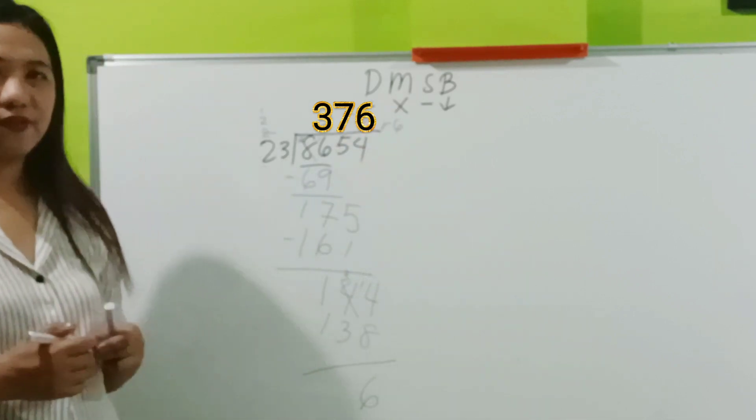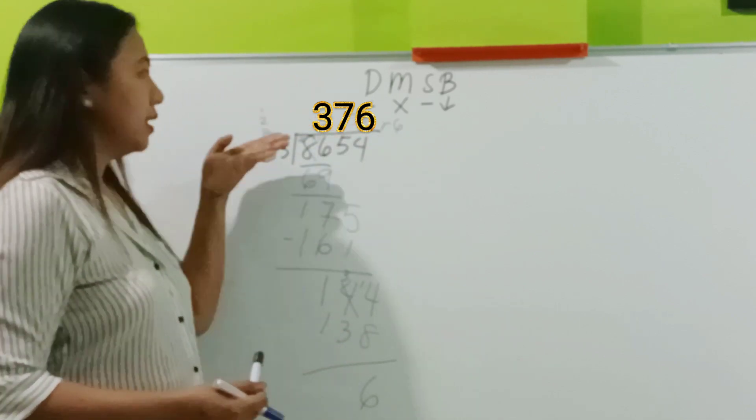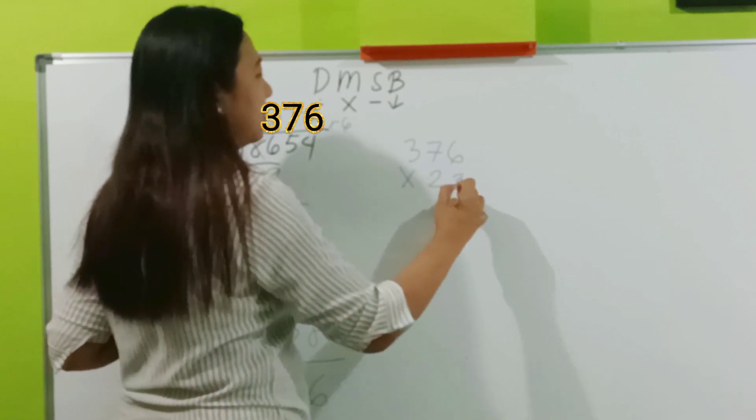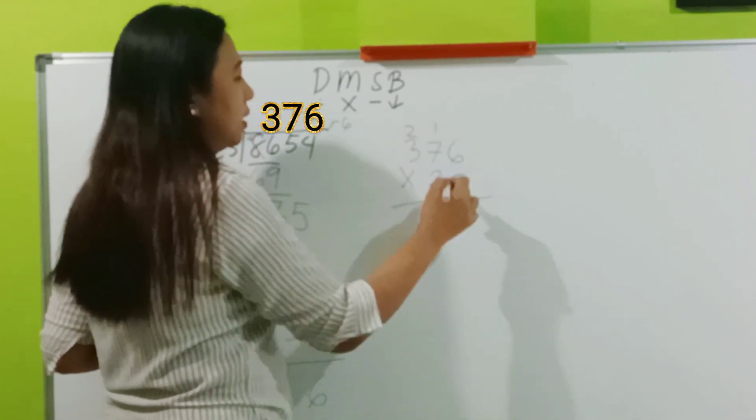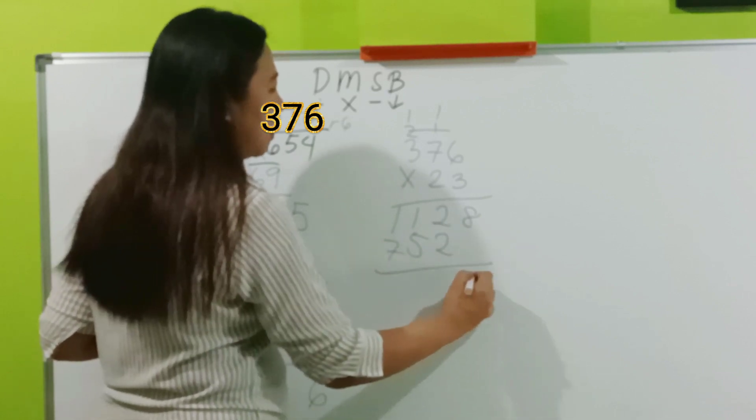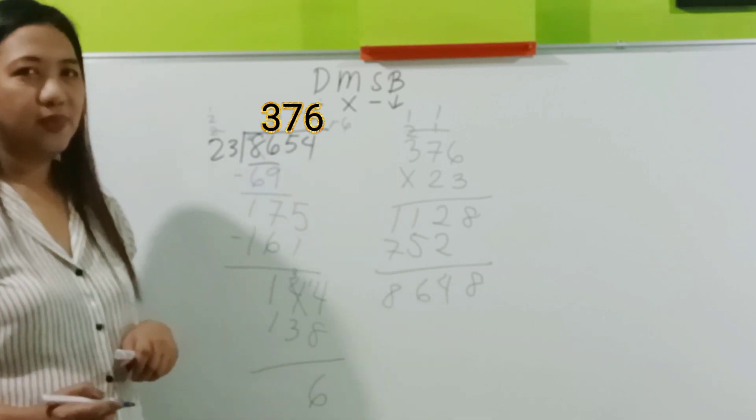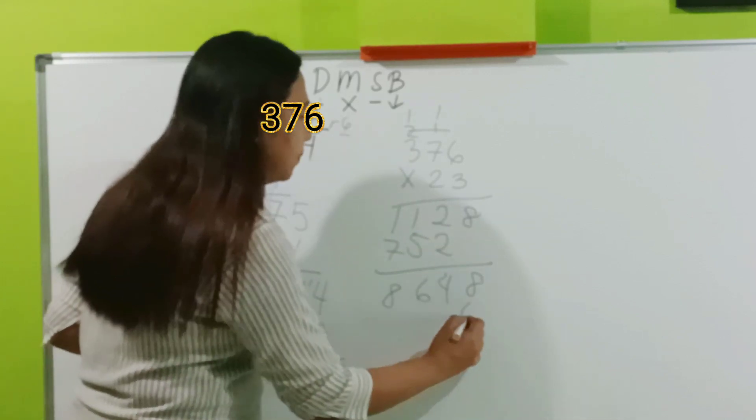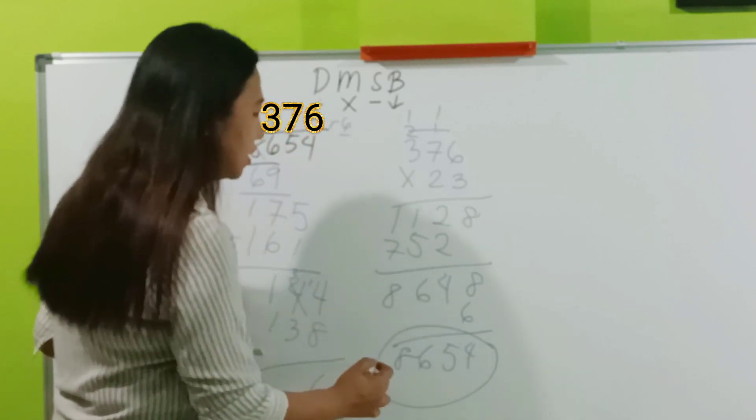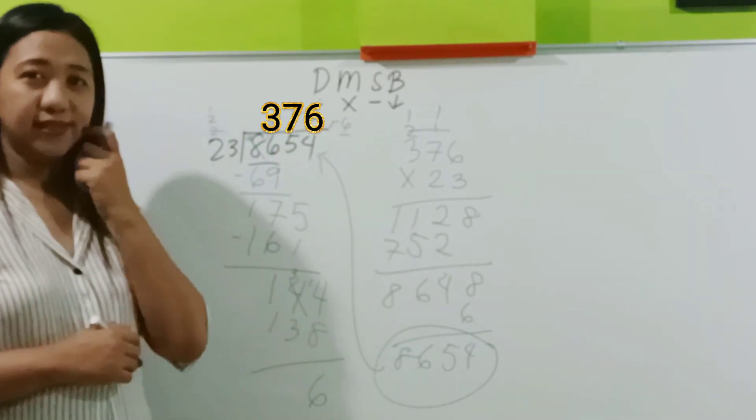How do you check if your answer is correct? By multiplying the quotient and the divisor. Let's check if our answer is correct. 376 by 23. 6 times 3 is 18. 2 times 6 is 12. We have 8. Now, what are you going to do with the remainder? We have to add plus 6. If we have the same answer with the dividend, then our answer is correct. So, did we arrive at the correct answer? Yes.